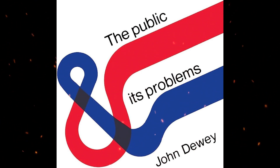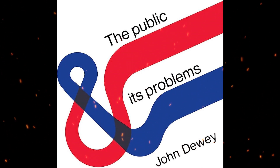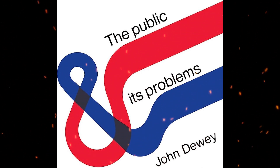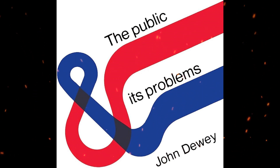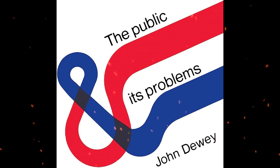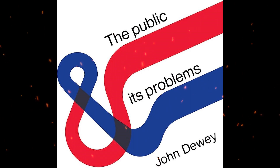This understanding of consequences leads to the recognition of negative externalities, whereby human actions may have indirect effects on unrelated parties. While many human actions primarily impact those directly involved, there are instances when the consequences extend beyond the immediate participants. For example, the decision of a small community to construct a factory within their town may initially appear as a private matter, affecting only the local residents. However, Dewey delves deeper into the ramifications of such actions, considering how they may have broader implications for the environment, public health, or neighboring communities.